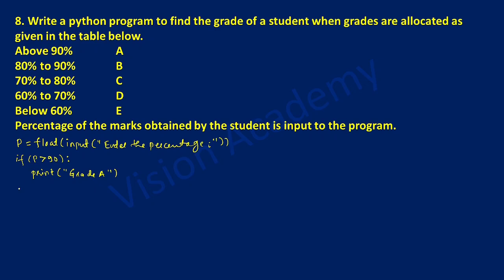If this condition is false then elif. The next condition: if P is greater than 80, colon. If this is true, with indentation we write the print statement and it should display grade B. End the double quotation mark and close the bracket.